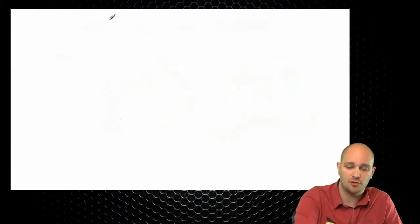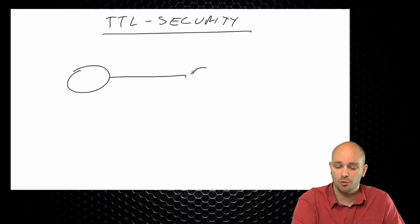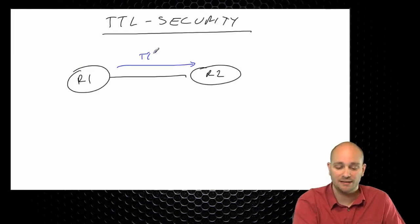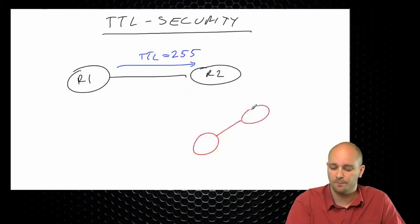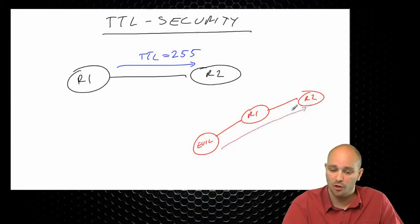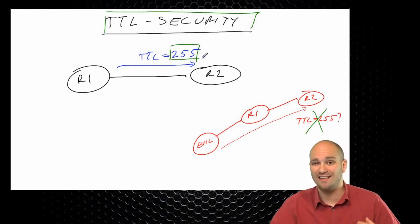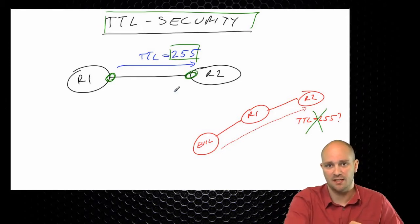There is a feature called TTL security, which does provide actual security and ensures that neighbors are directly connected. If I enable TTL security between R1 and R2, I am sending packets with TTL 255. If there's an evil device in between, there is no way it can send a packet to R2 and still ensure it arrives with TTL 255. So enabling TTL security does ensure neighbors are directly connected. But for this feature to work, it must be enabled on both sides of the external peering session.